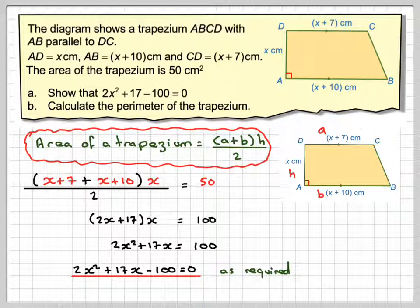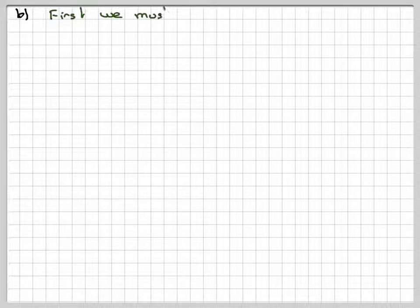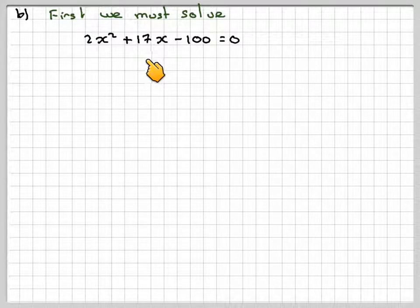We now have to calculate the perimeter of the trapezium, and in order to do that, we're going to find the value of X. That means first we must solve the quadratic equation 2X squared plus 17X minus 100 is equal to 0.